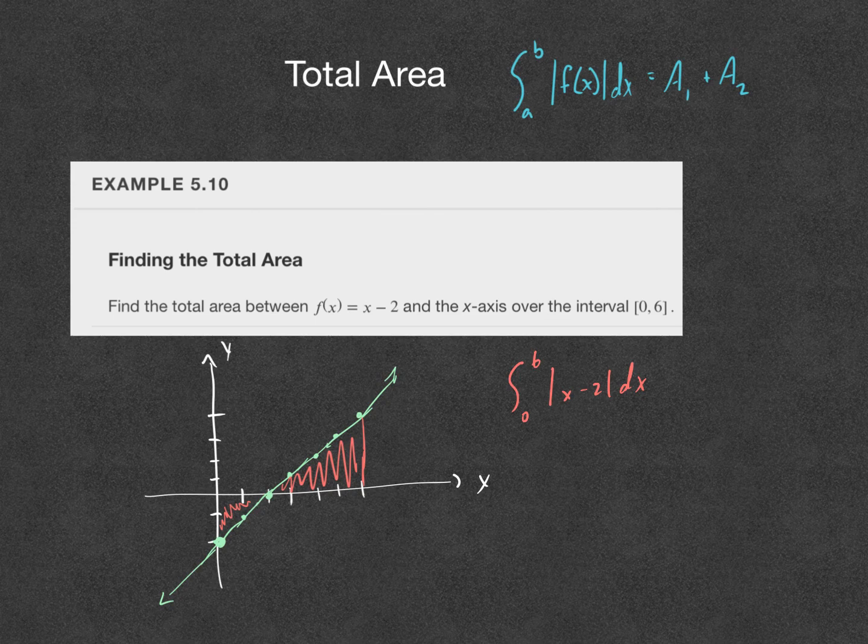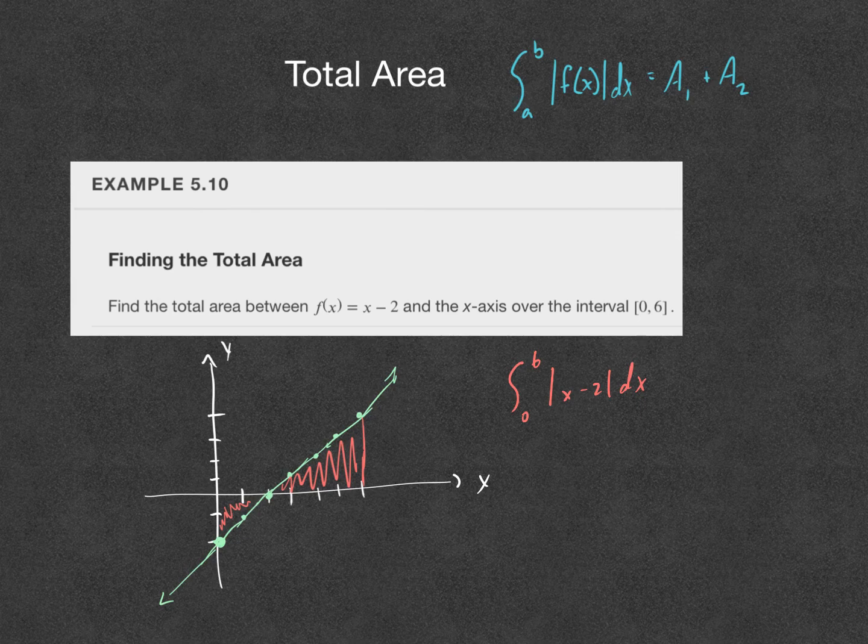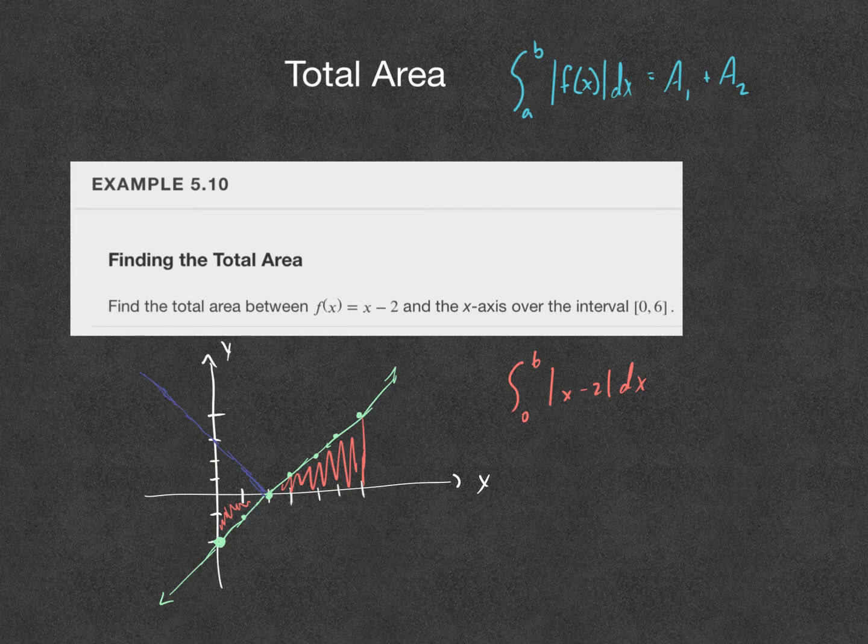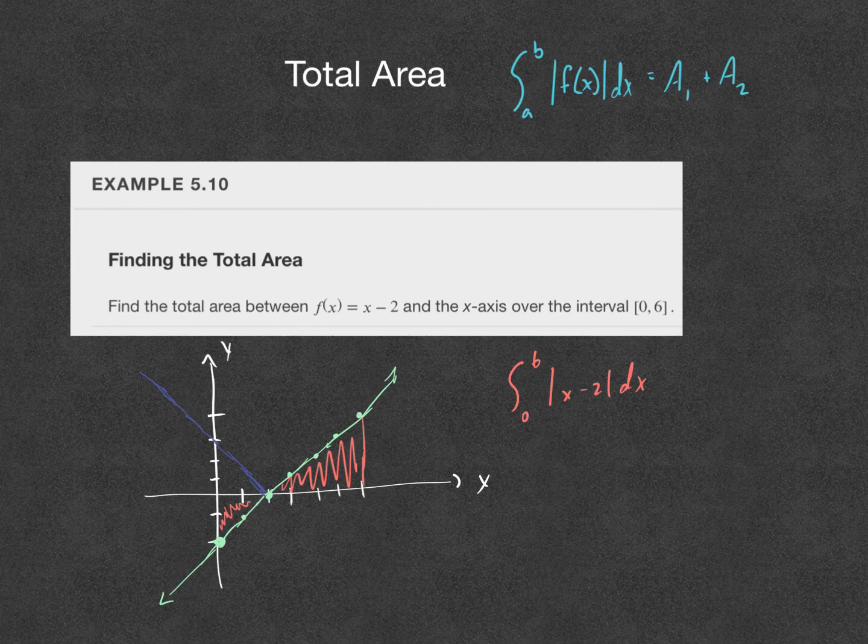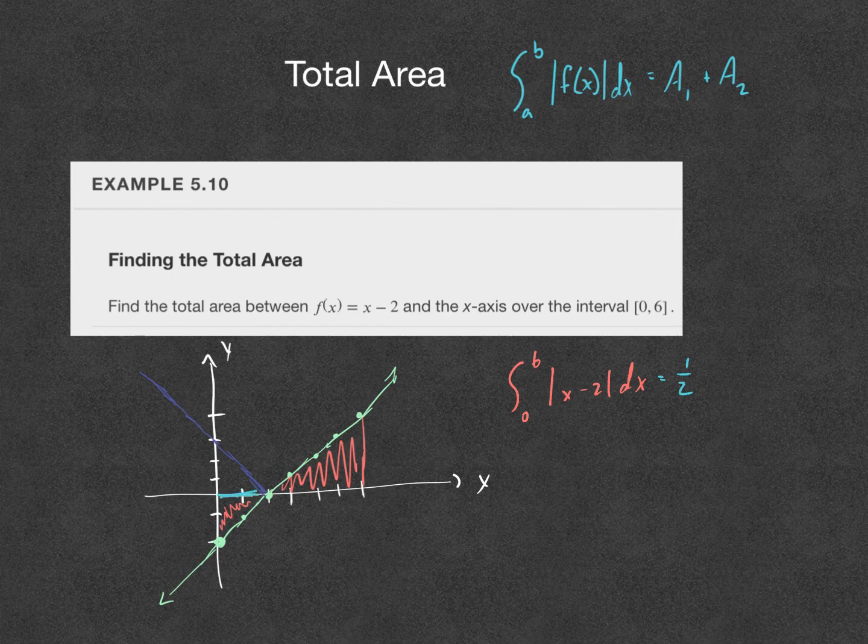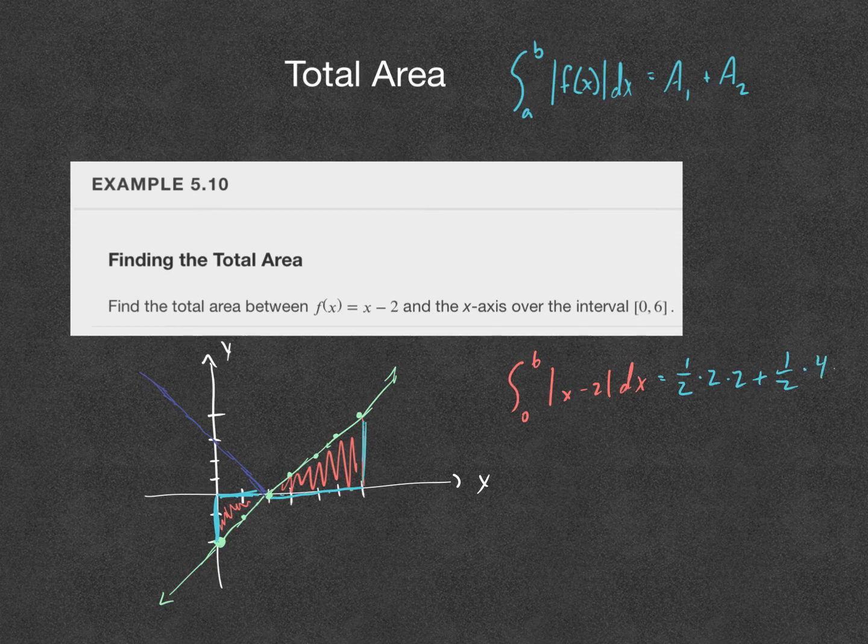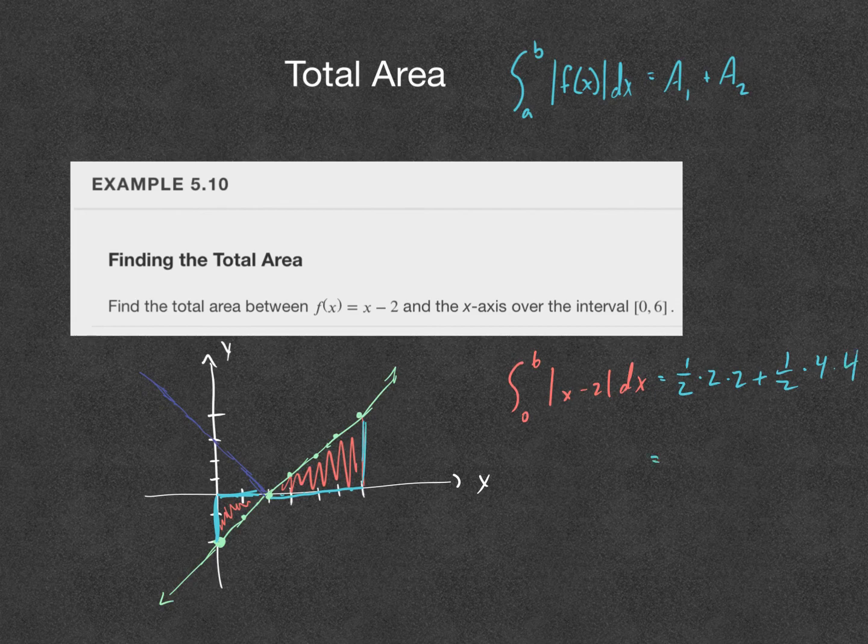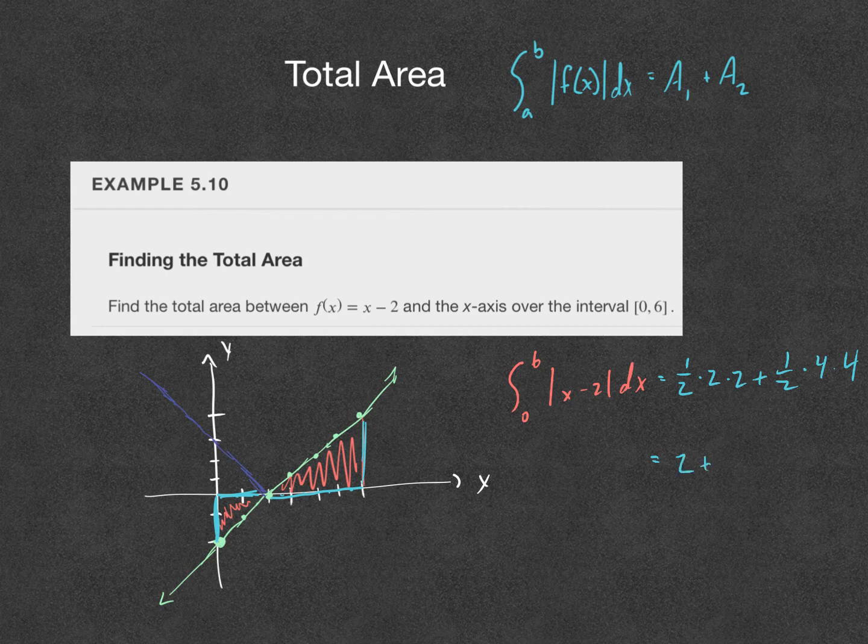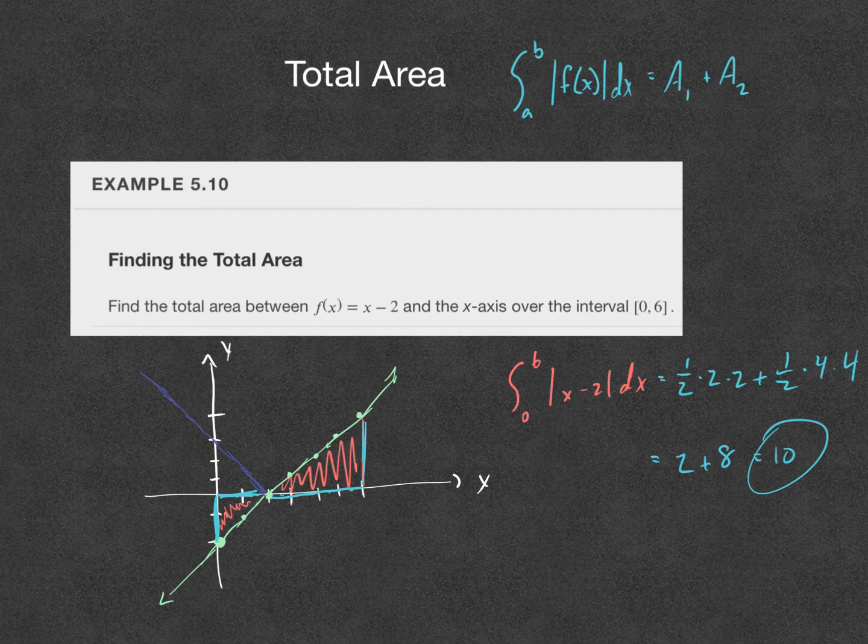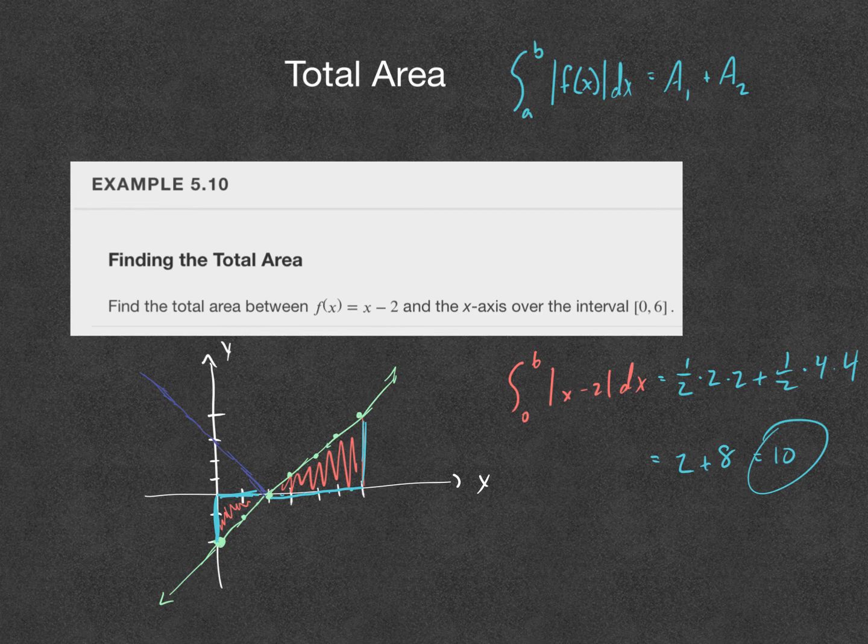If you were actually to graph the absolute value function, it would look really similar, except that green line that goes below would actually v up and come up here. That's what it would look like if you were to graph the absolute value function. But we have just the regular function and we're finding the total area. I can get the area of these two triangles. I just need to know one half the base of this triangle is 2 and the height is also 2, plus one half the base of this triangle is 4 and the height is also 4. Half of 2 times 2 is 2, half of 4 times 4 is 8. 2 plus 8 is 10. So the area between that function and the x-axis over the given interval is 10.